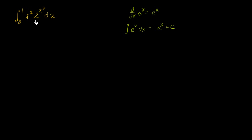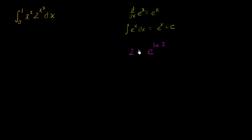The way I would do that is re-express two in terms of e. Two is equal to e raised to the power you need to raise e to in order to get two. What's the power you have to raise e to to get two? That's the natural log of two. The natural log of two is the exponent you raise e to in order to get two, so if you actually raise e to it, you get two.